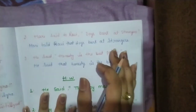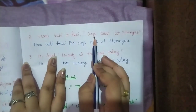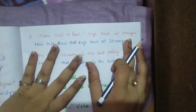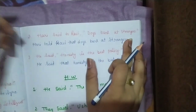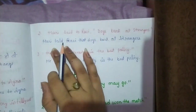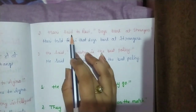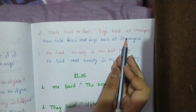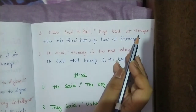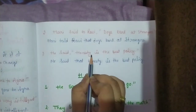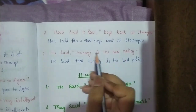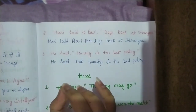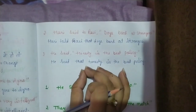Next example: Hari said to Ravi — dogs bark at strangers. Hari said to Ravi that dogs bark at strangers — no change, habitual fact. Another example: He said — honesty is the best policy. Honesty is the best policy is a proverb, so he said that honesty is the best policy. No change in universal truth, habitual fact, or proverb.